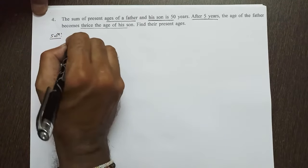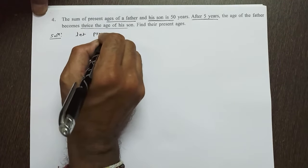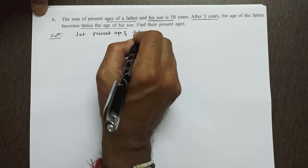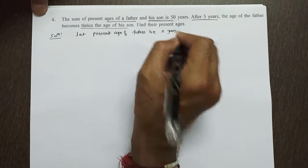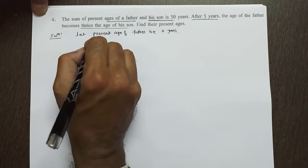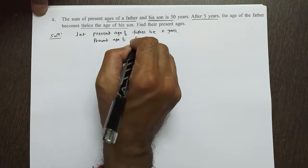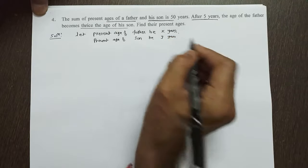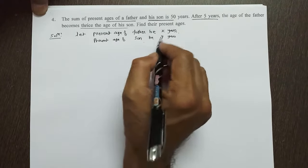Let present age of father be X years. I thought that father's age is X years and present age of son is Y years.